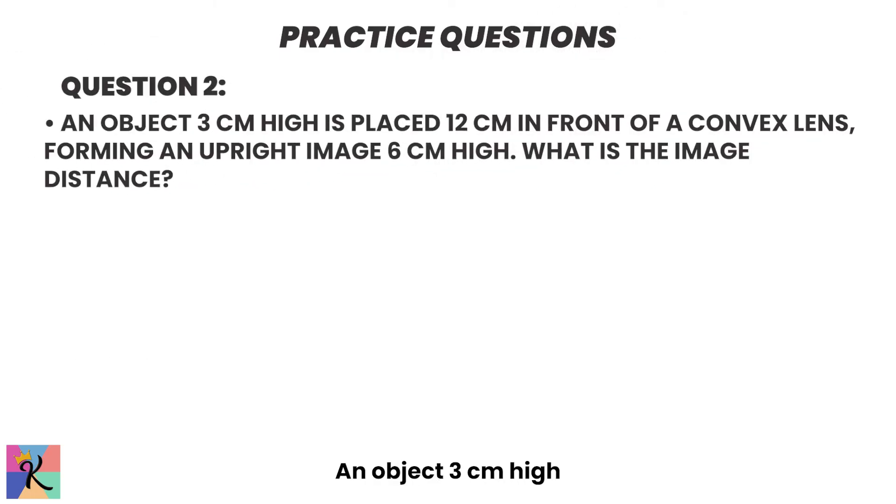Now, we'll do another question. An object 3 centimeters high is placed 12 centimeters in front of a convex lens, forming an upright image 6 centimeters high. What is the image distance? A, 12 centimeters. B, 18 centimeters. C, 24 centimeters. Or D, 36 centimeters. Take a moment and pause to answer the question.